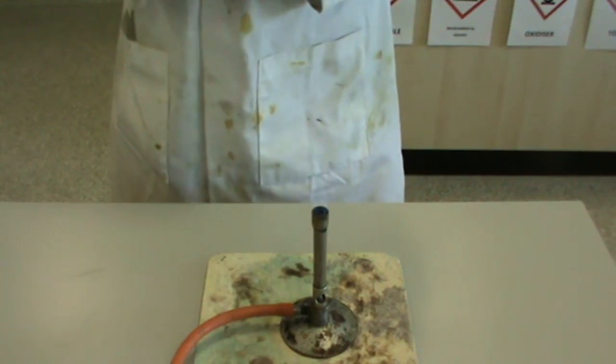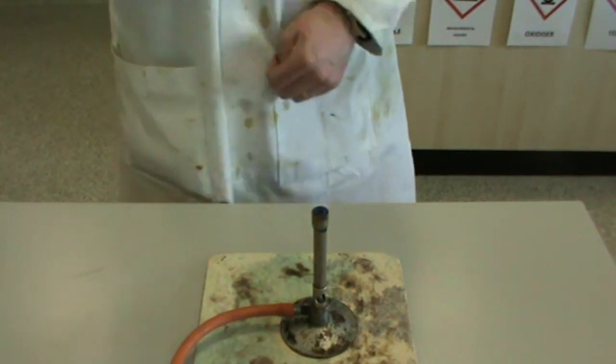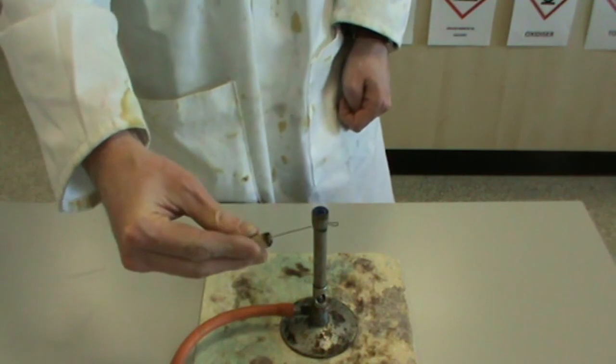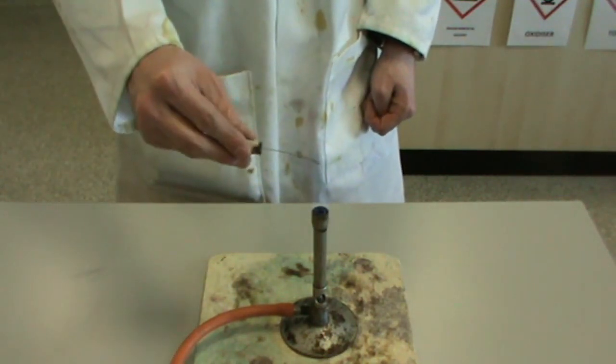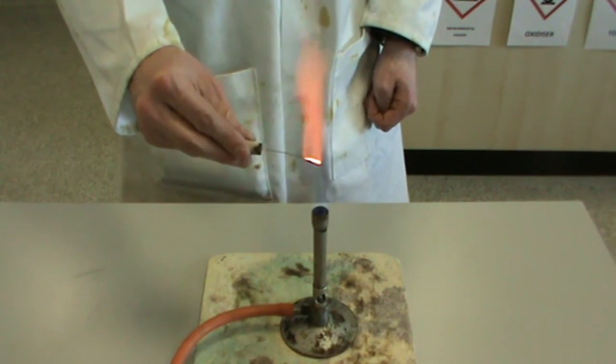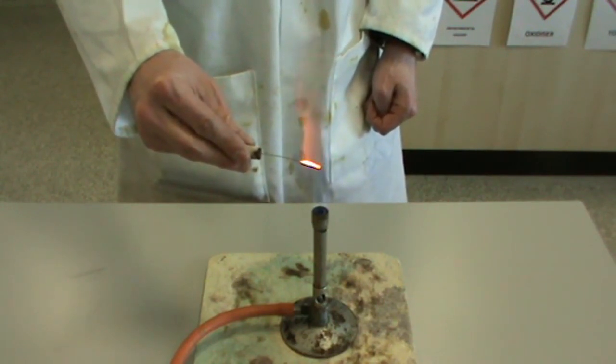To carry out the flame tests of a solution, you first of all need a metal loop and we need to make sure that there aren't any traces of any metal ions still present on there. To remove that, we will heat the loop until the flame goes clear.